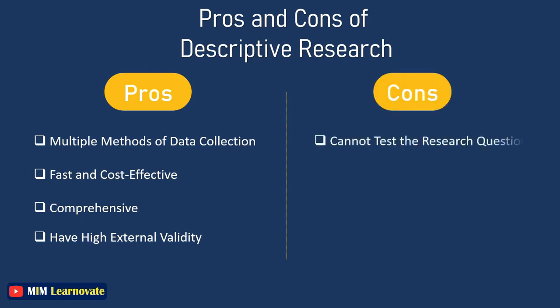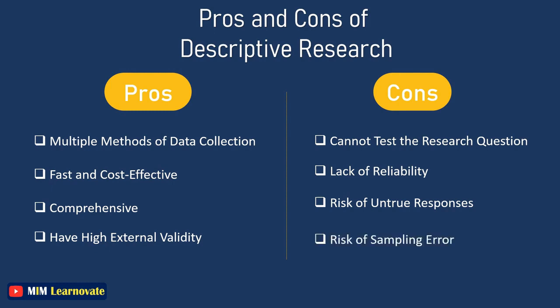Cons of descriptive research: It cannot test or verify the research question, as the data collected does not explain the cause of the phenomena being studied. There is a lack of reliability if the research problem isn't formulated well, making it difficult to carry out a credible investigation. There is a risk of untrue responses, especially in surveys, which can compromise the validity of collected data. There is also a risk of sampling error, as random sampling may not produce a sample group representative of the larger population, leading to unreliable results.